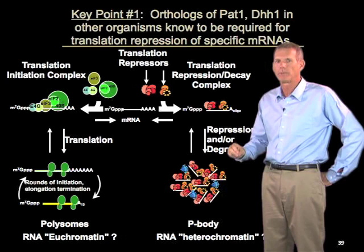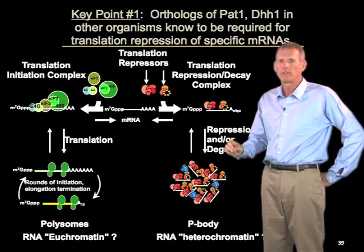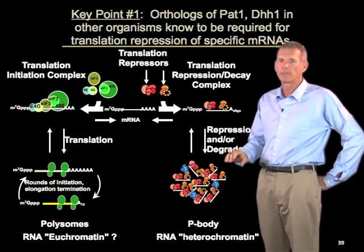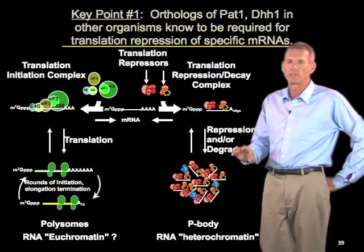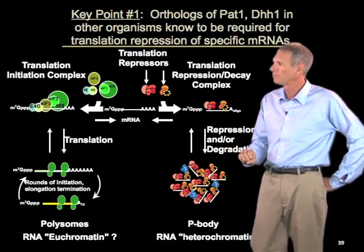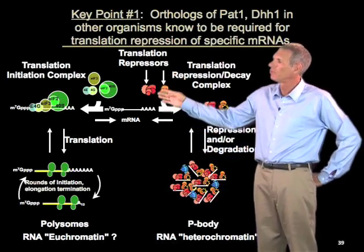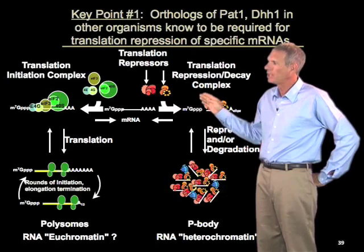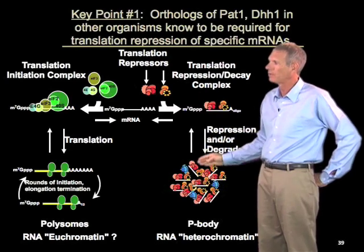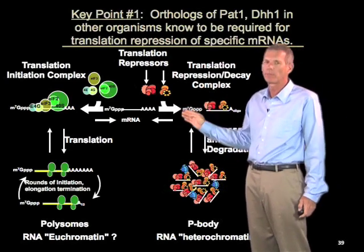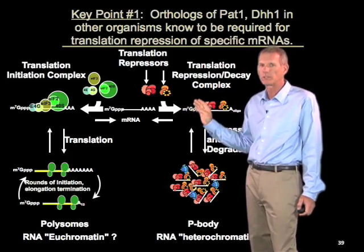We also know that in neurons, where many mRNAs are stored, some of those mRNAs — preventing them from entering translation — requires Me31B, the DHH1 protein ortholog. So this repression-decay complex is not just for driving RNAs into decapping; it's also for maintaining some mRNAs in a translationally repressed state.